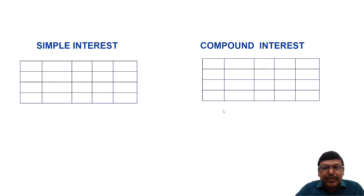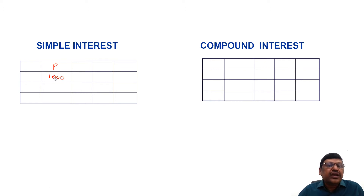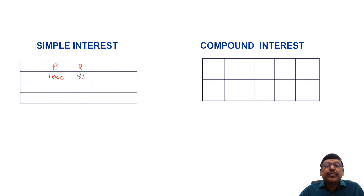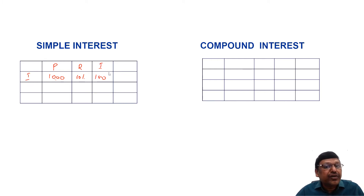Now let's see how they are calculated. We will take two tables and fill them using the simple interest scheme and the compound interest scheme. For example, say there is a principal of 1000 rupees — a person borrowed 1000 rupees at the rate of 10 percent per annum. Per hundred per year means 10 percent of 1000 is 100 rupees interest for the first year.